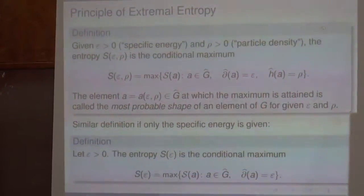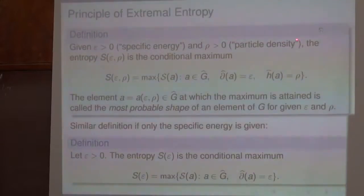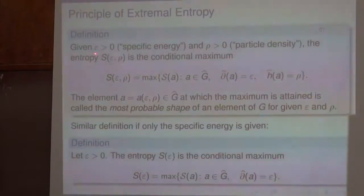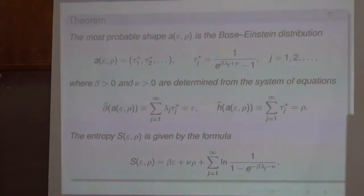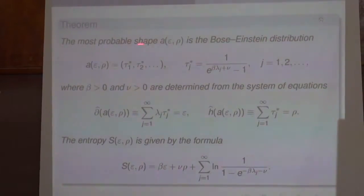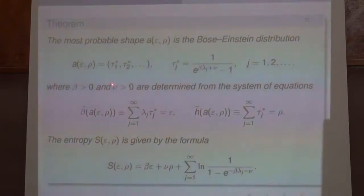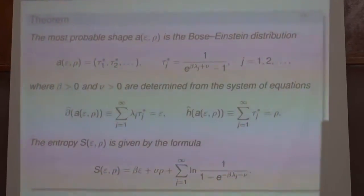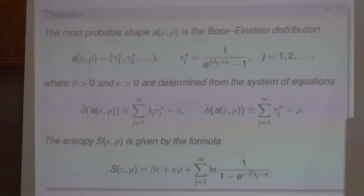Now we can define the most probable elements of this group G-hat by maximizing the entropy. We can maximize if both the energy and particle density are given, or if only the energy is given. The theorem states that the most probable shape in this setting is the Bose-Einstein distribution, given by this formula, where beta and nu are determined from this system of equations. The entropy is given by this known formula.